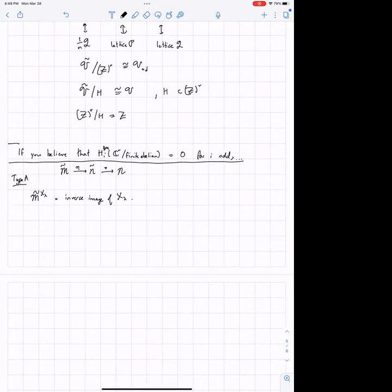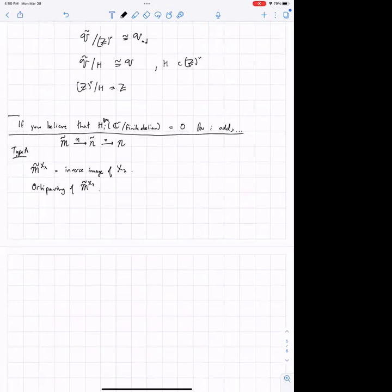And so I want to let m tilde of x lambda be the inverse image of x lambda, and we want to describe our orbit paving of m tilde. But I think from the toric picture, you can sort of believe why you might need an orbit paving, because you sort of are naturally putting in this variety, which is CR modifying a group. So let me just tell you what the situation is here.